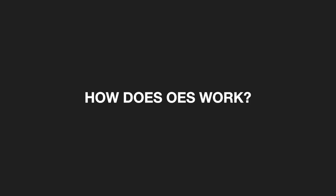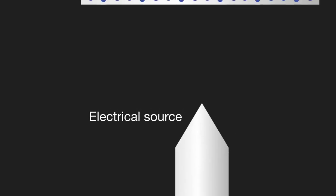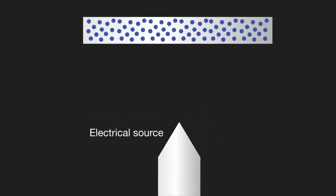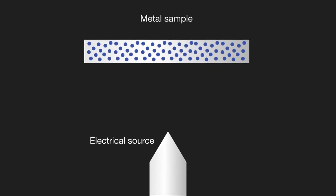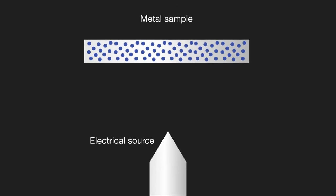So how does optical emission spectroscopy work? All OES analyzers contain three major components. The first is an electrical source to excite atoms within a metallic sample, so that they emit characteristic light or optical emission lines.